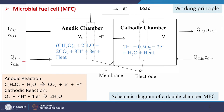The electrons generated in the bulk of the solution will be transmitted to the surface of the anode, flow through an external circuit, and come to the cathodic chamber. H⁺ ions will move from the anodic chamber to the cathodic chamber through the membrane. At the cathode, H⁺ plus electrons plus oxygen are combined: 0.5 mol oxygen with 2H⁺ and 2 electrons gives H₂O plus heat.